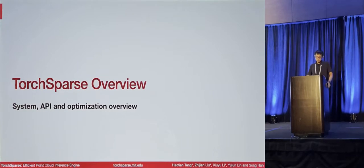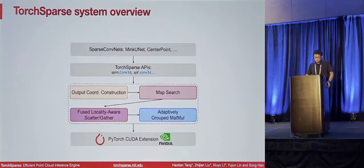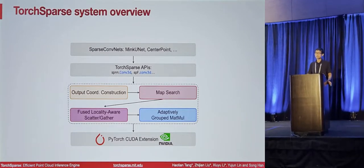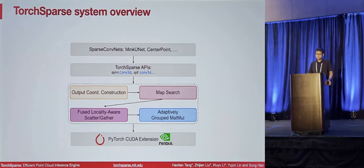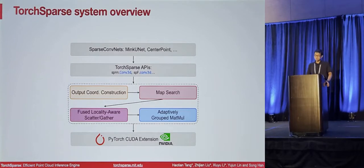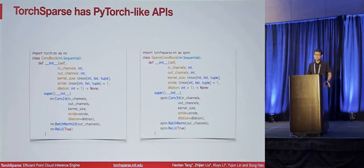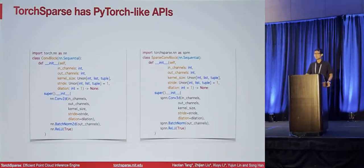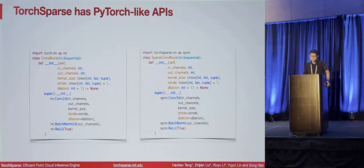Now let me provide an overview of our TorchSparse system. Our system shares a very similar API interface compared with PyTorch, so users can compose customized point cloud networks with our APIs such as SPNN.Conv3D. Everything below this abstraction layer is wrapped as a CUDA extension in the PyTorch framework. Our API is very familiar to PyTorch users — you just need to switch from nn.Conv2D to SPNN.Conv3D in our library, and you can perform inference on point cloud data instead of dense image matrices.